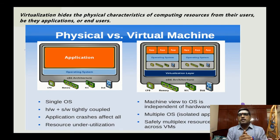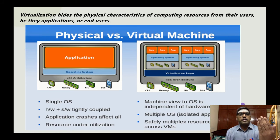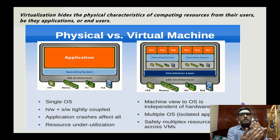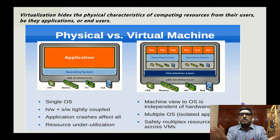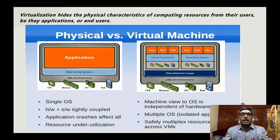Virtualization hides the physical characteristics of computing resources from their users, be they applications or end users. One thing appears on the outside, while something different is happening inside — just like a person who speaks one thing but thinks in many different ways without expressing it.